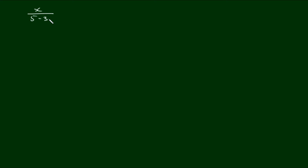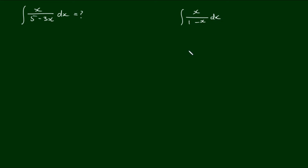Let's try and solve the integral of x over 5 minus 3x. We're going to do this by following the same steps as we did in the last video where we integrated x over 1 minus x. I will leave a link to that video. This one is a little bit more complicated, but the principles are exactly the same.